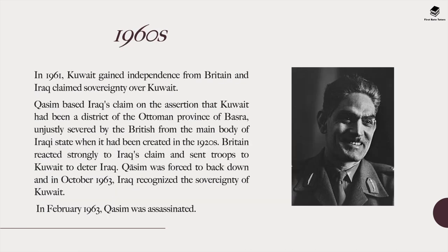In 1961, Kuwait gained independence from Britain; however, Iraq claimed sovereignty over it. Qasim based Iraq's claim on the assertion that Kuwait had been a district of the Ottoman province of Basra, unjustly severed by the British. Britain reacted strongly and sent troops to Kuwait to deter Iraq, and Qasim was forced to back down. In October 1963, Iraq recognized the sovereignty of Kuwait.